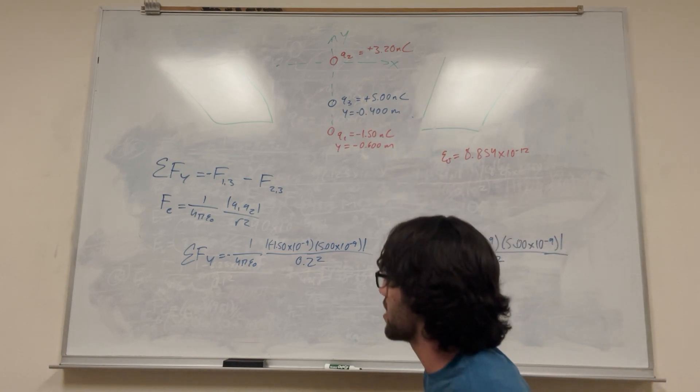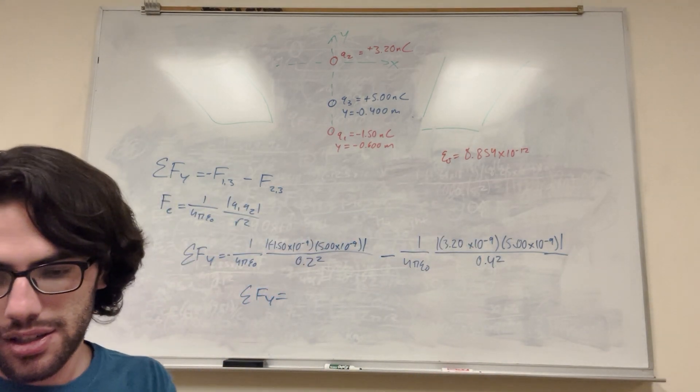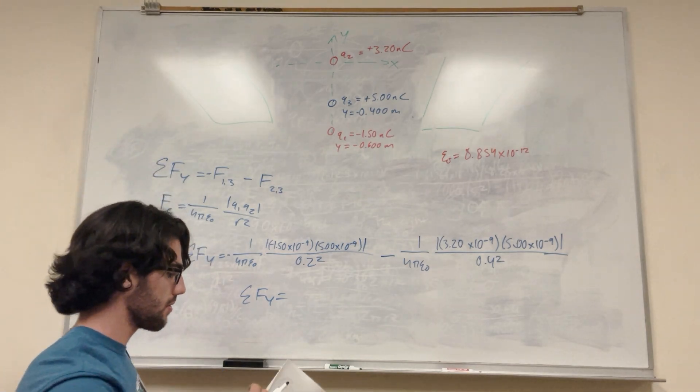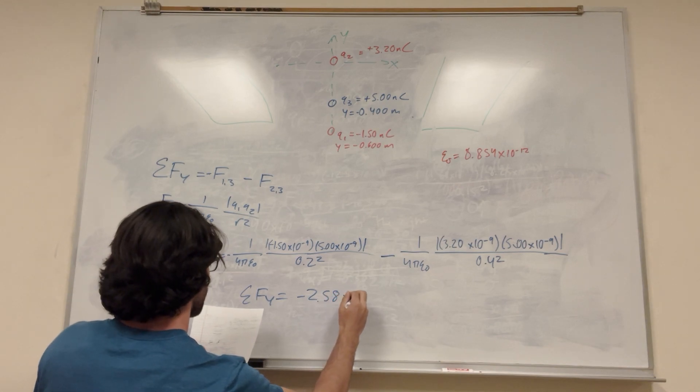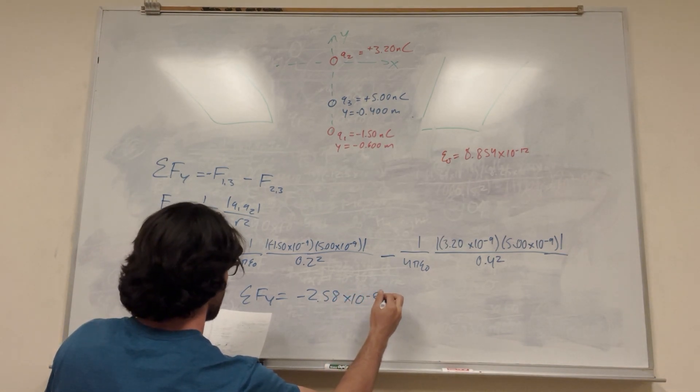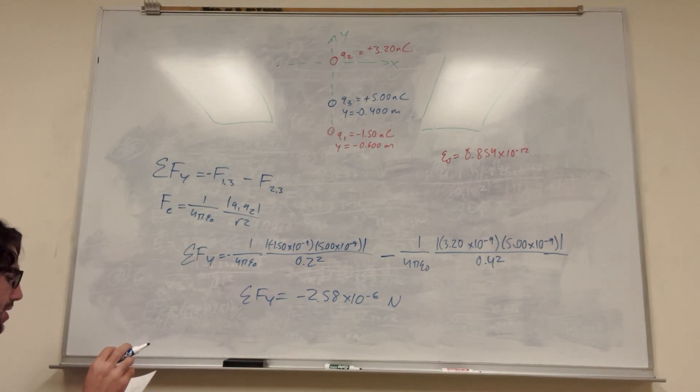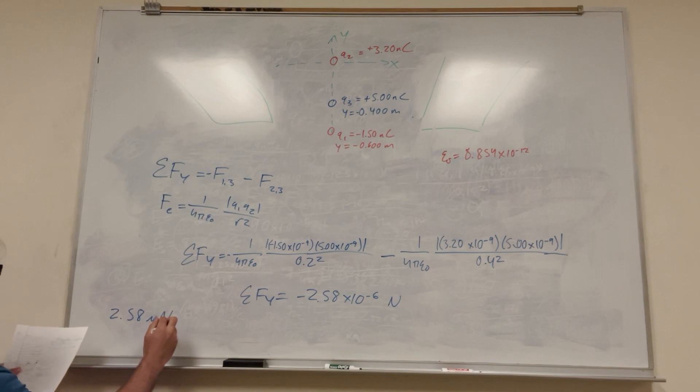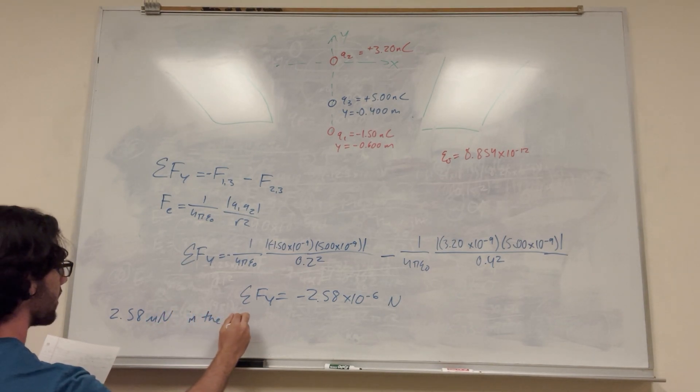So if you do the math on these, plugging in epsilon, you're going to get sum of the forces in the y direction is equal to negative 2.58 times 10 to the negative 6 newtons. So there's your value, but I want it to be more simple, so the actual answer is just going to be 2.58 and then we're going to convert it to micronewtons in the negative y direction.